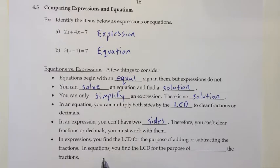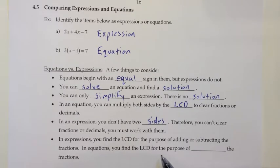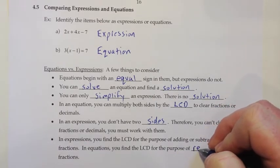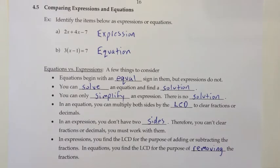In an expression, you're still probably going to find the LCD if there are fractions, but that's for the purpose of adding and subtracting the fractions — because to add and subtract fractions, you need a common denominator. In equations, you're not trying to add and subtract; you're trying to remove the fractions. So in equations, you find the LCD for the purpose of removing the fractions. In an expression, we work with those fractions by getting a common denominator and changing every fraction to have it. In an equation, we use the LCD to get rid of them entirely.